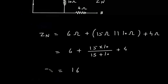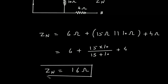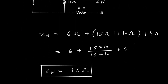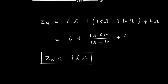Therefore, Zn is equal to 16 Ohm. To summarize, we had to find Norton's equivalent impedance for the active linear network shown in the figure, and Norton's equivalent impedance is Zn = 16 Ohm. This is the final answer. Thank you.